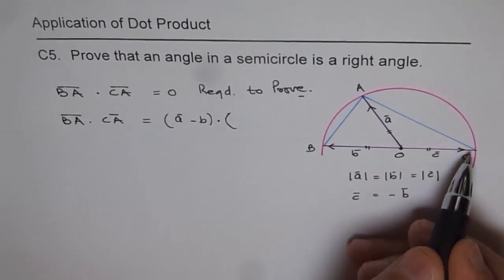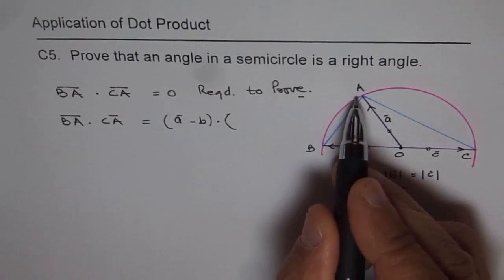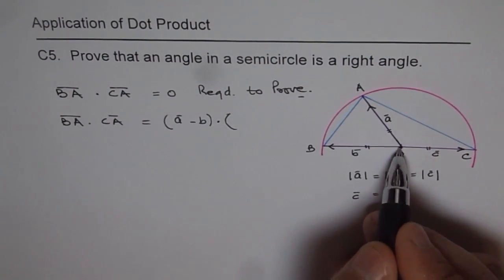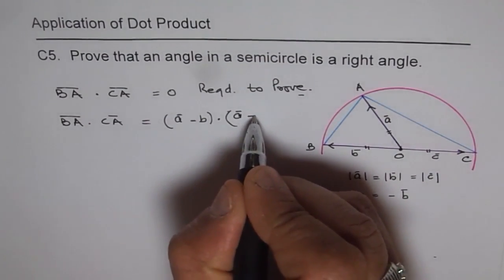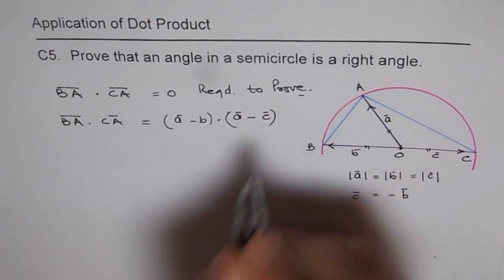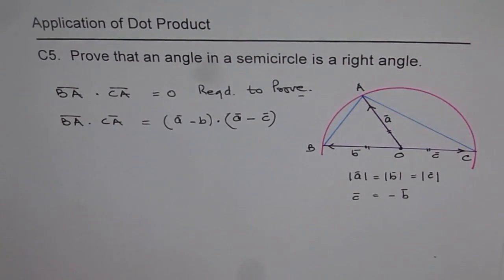Now what is CA? CA will be vector A minus vector C. Vector A minus vector C. So that is BA dot CA.